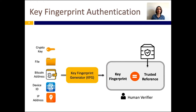Throughout this talk, we consider the following key fingerprint-based authentication model in general. First, the user receives an input string that she needs to authenticate. This input string can be a cryptographic key, a file downloaded from the internet, a bitcoin address, or even a device identifier. A key fingerprint generation function converts this input string into a key fingerprint. Then, the user needs to visually compare this fingerprint against a trusted reference value of the fingerprint that she has previously obtained through a secure out-of-band channel.